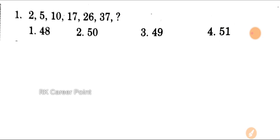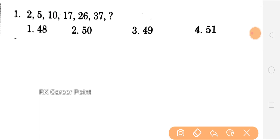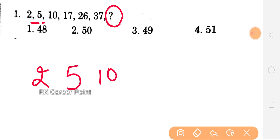First question: 2, 5, 10, 17, 26, 37, question mark. In this question mark, we need to find the missing number. Let's work out this question mark. So we have to look at the numbers.